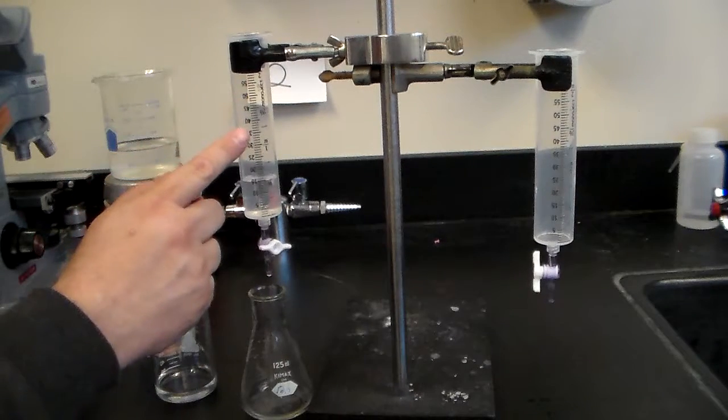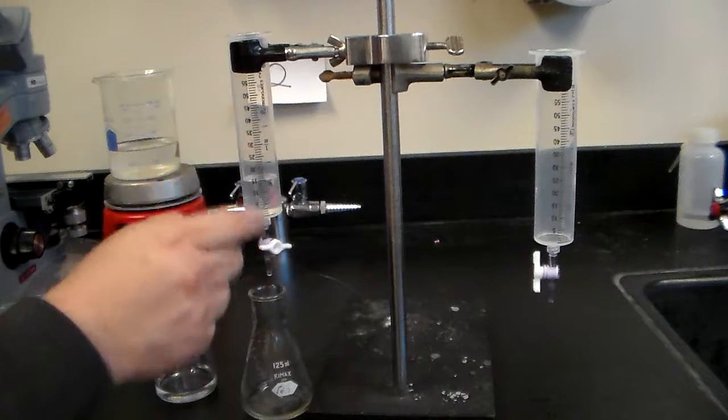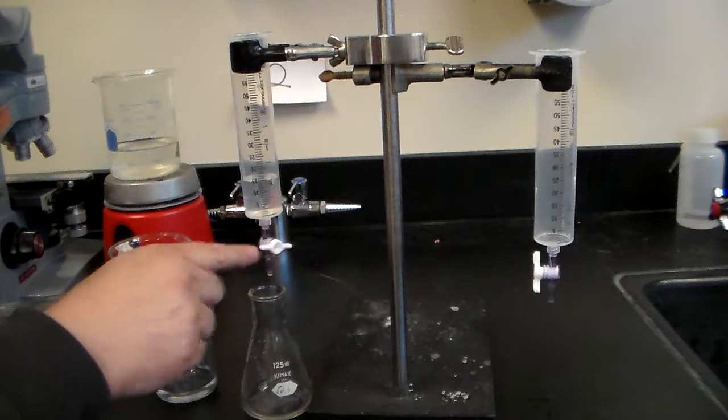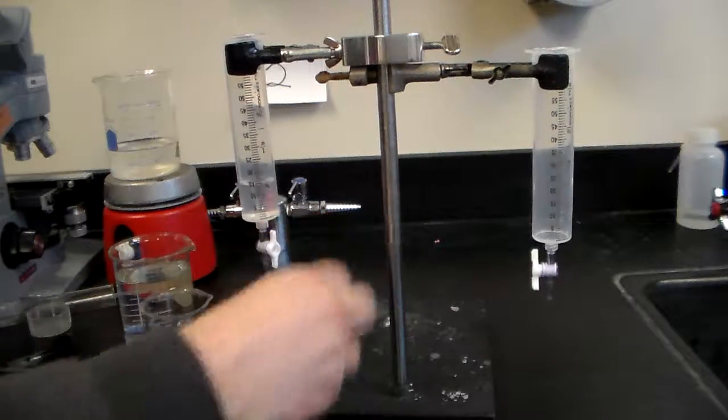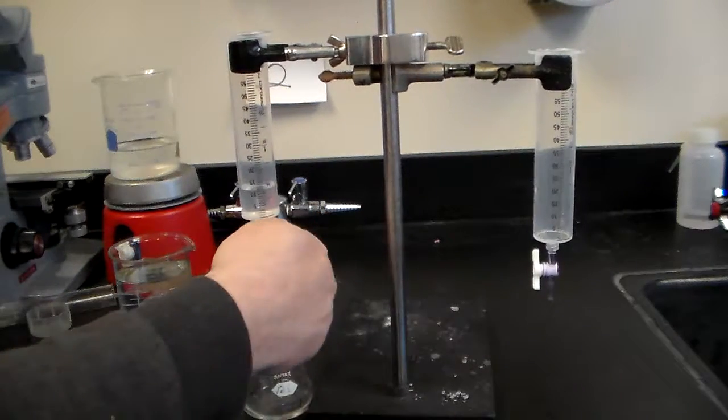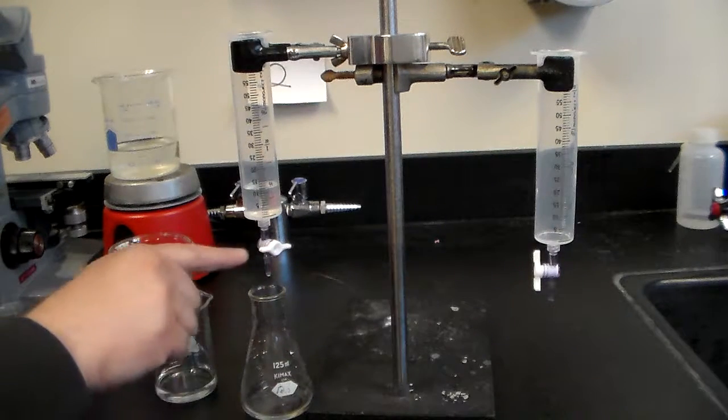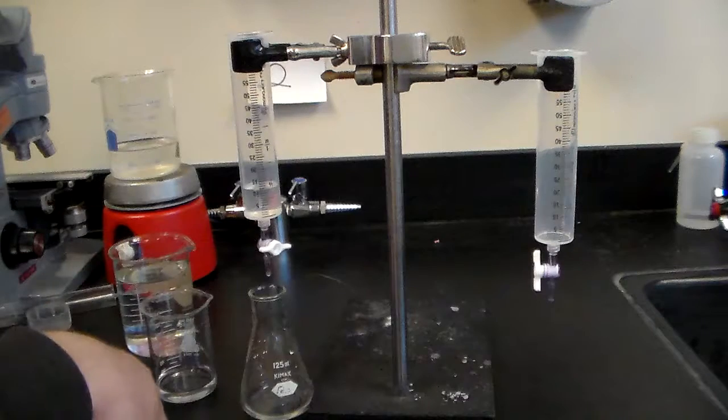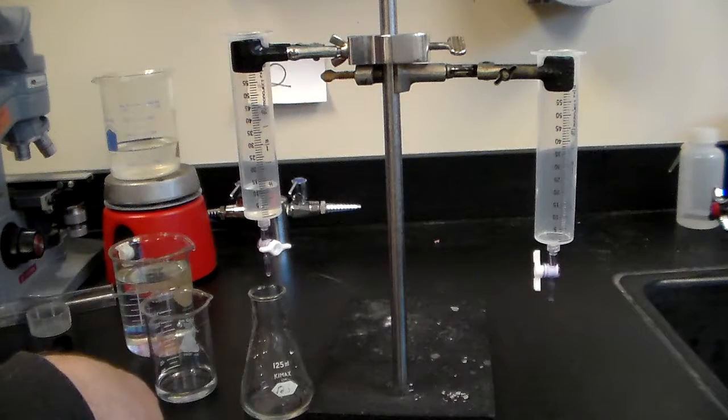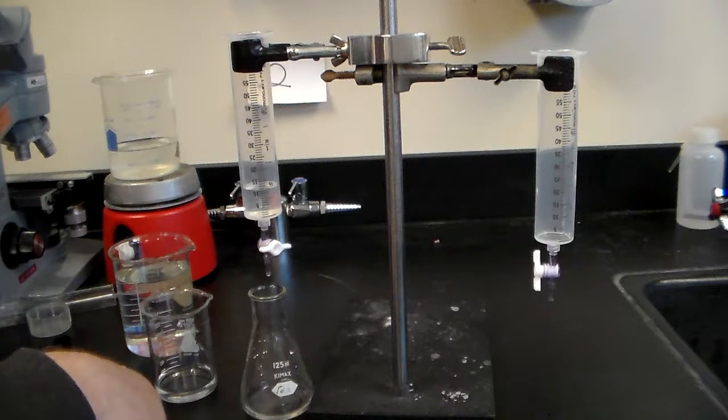You're going to fill the burette to a certain volume. You're going to make sure there are no air bubbles in here by turning the nozzle like this to allow the water, well in this case it's water, to flow through so there are no air bubbles in here, because that will disrupt the lab, that will disrupt your data.